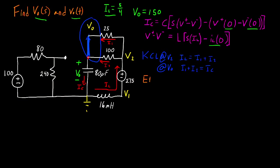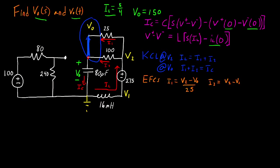For the next step, I have to write the equations for my components. Everything I'm about to write is going to be in the s domain — I'm not going to write 'as a function of s' every single time, but keep in mind all voltage and current values are functions of s. Starting with the easy ones, my two resistors: I1 = (V2 − V_o)/25, and I2 = (V2 − V_o)/100.